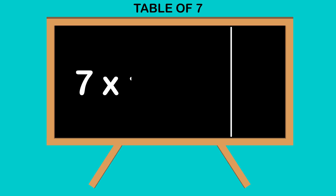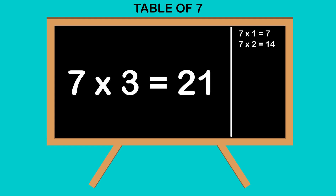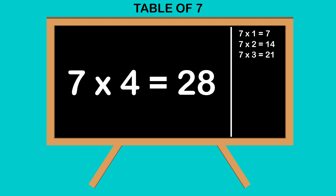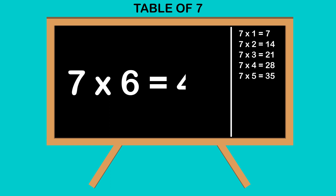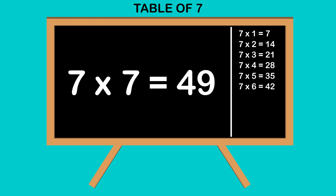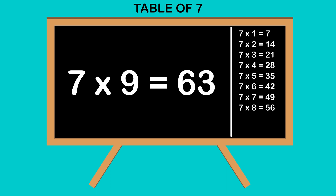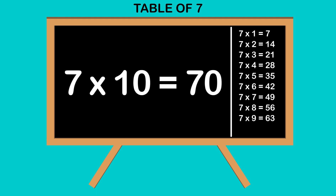Table of 7. 7 1's are 7, 7 2's are 14, 7 3's are 21, 7 4's are 28, 7 5's are 35, 7 6's are 42, 7 7's are 49, 7 8's are 56, 7 9's are 63, 7 10's are 70.